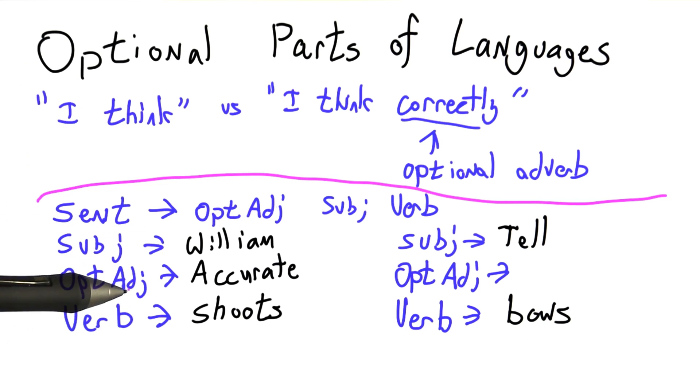But our optional adjective can either be the adjective accurate, or it can be nothing. It disappears.